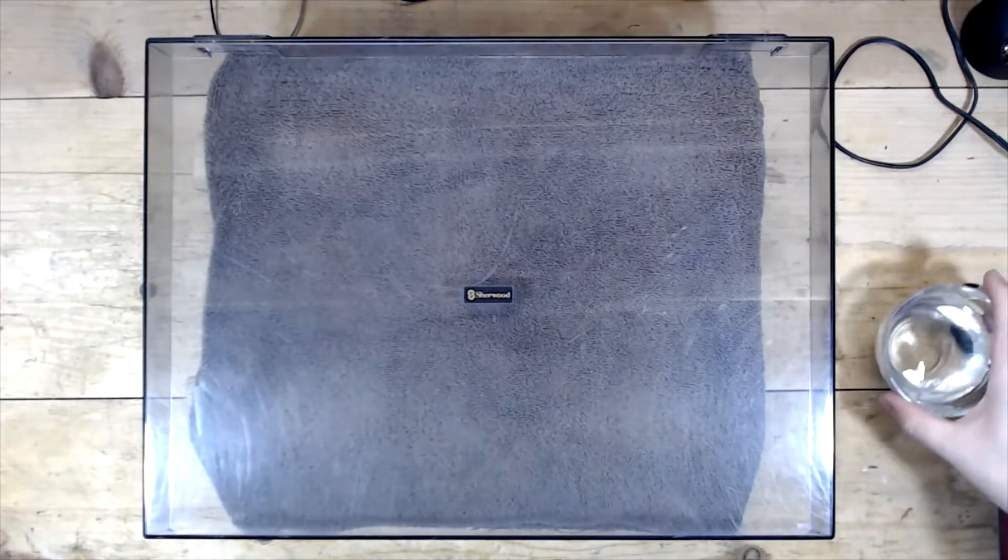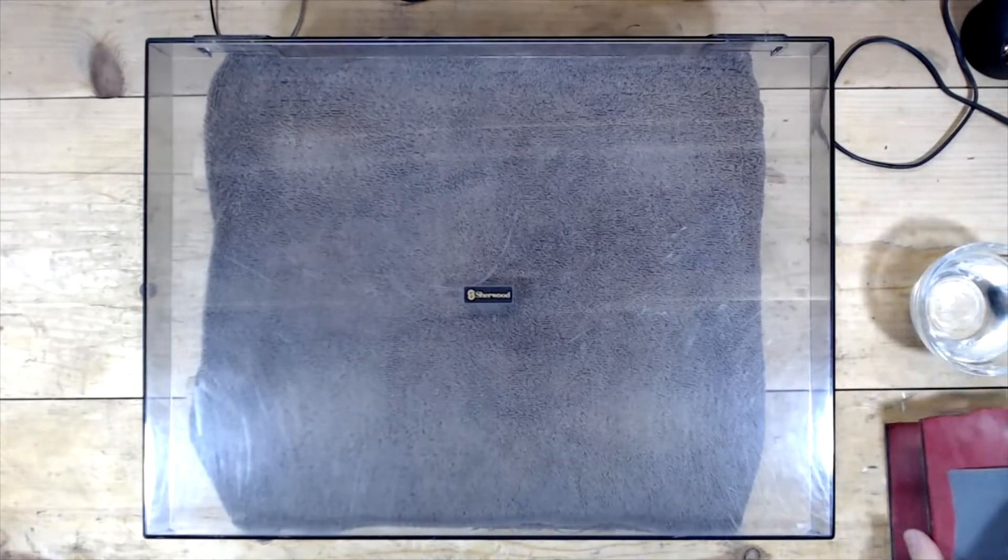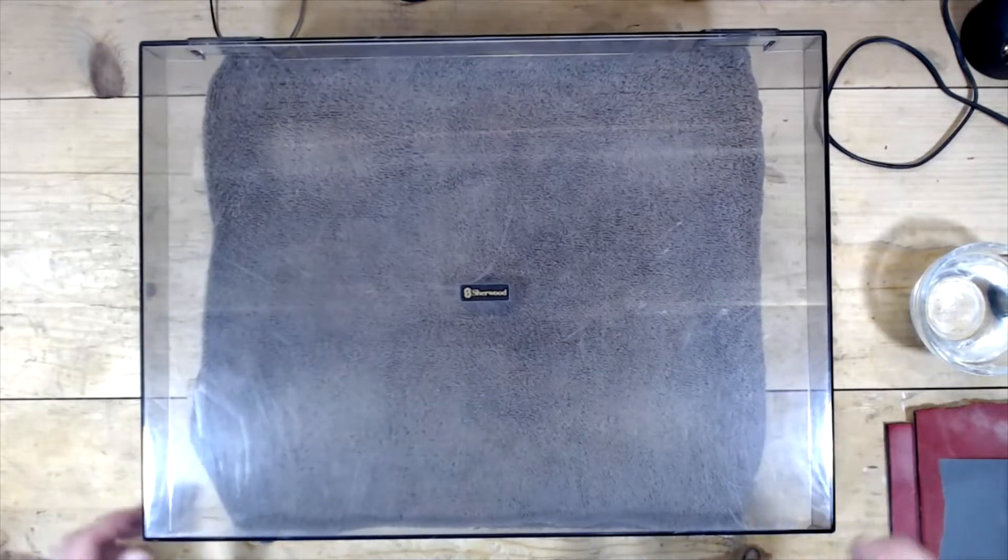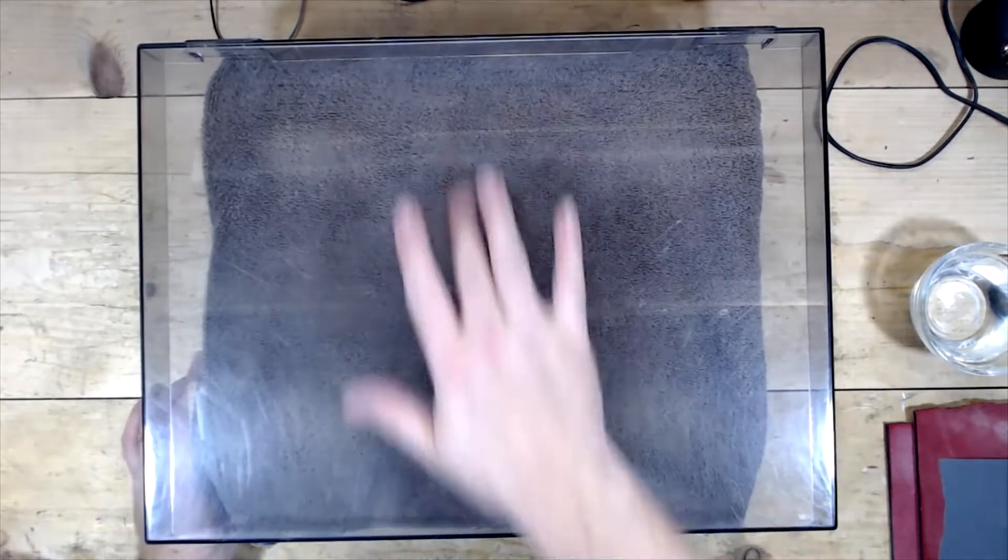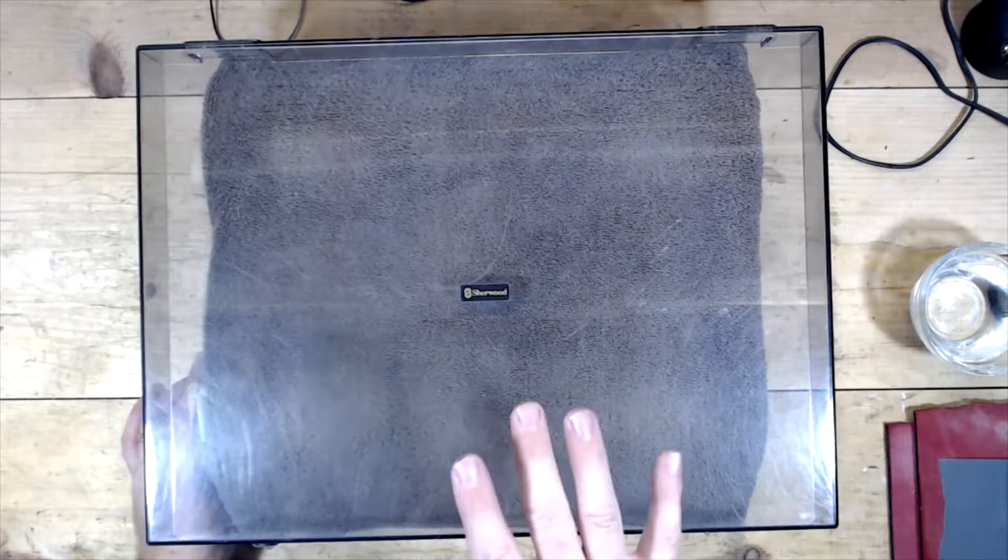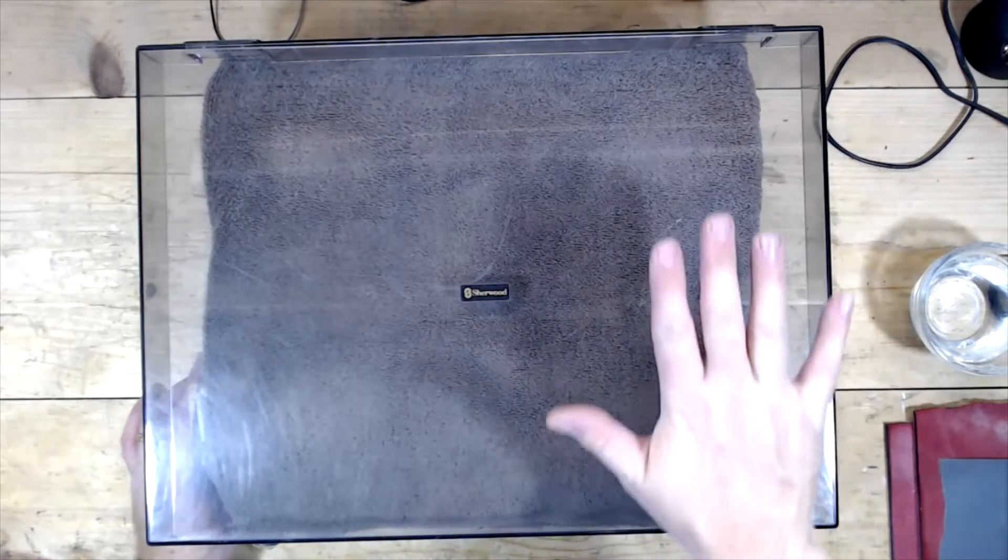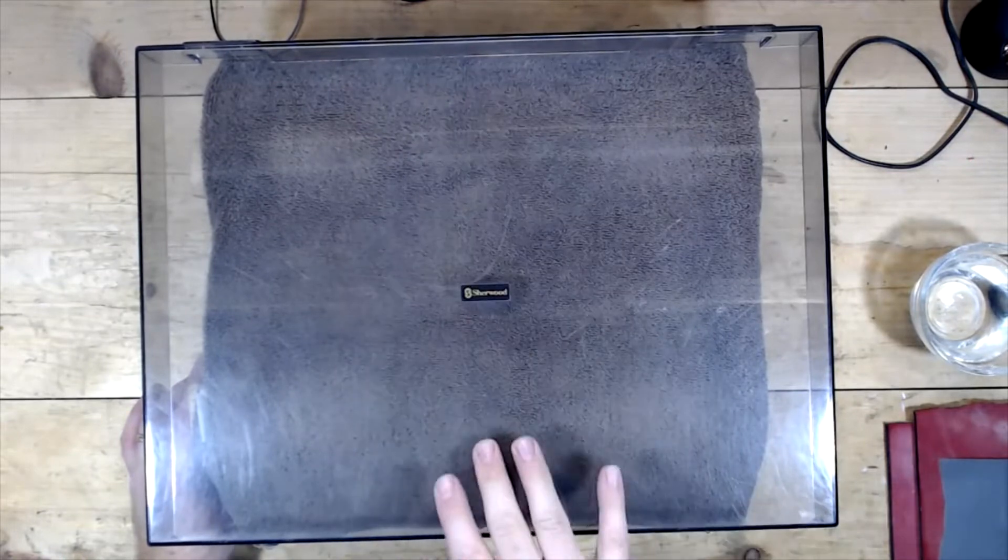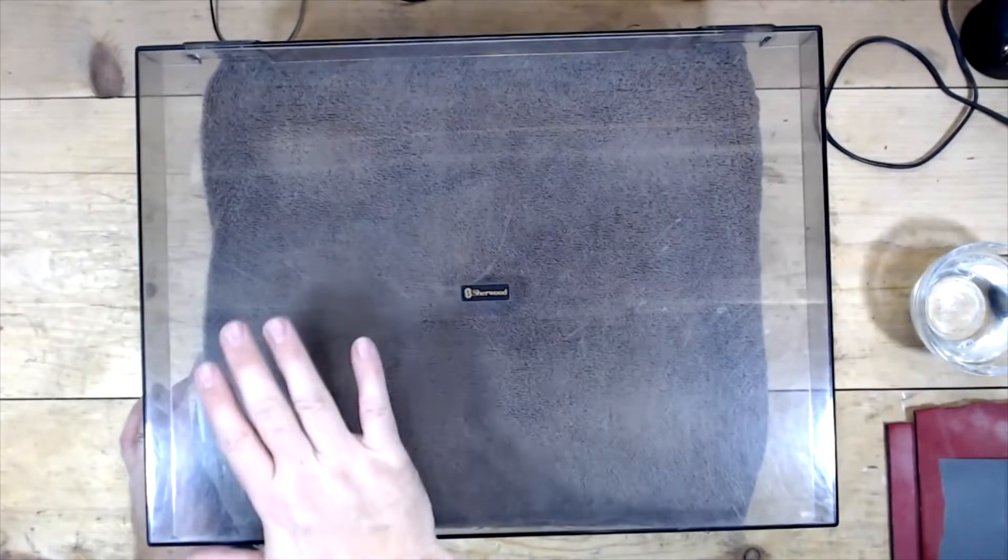But the dust cover is in kind of rough shape, and what I thought would be interesting to do is I'm going to mask half of this off and sand one half, then buff one half and give a comparison—kind of a before and an after.